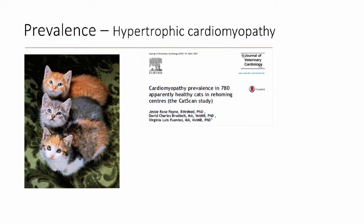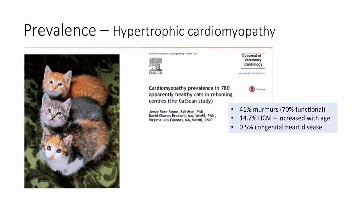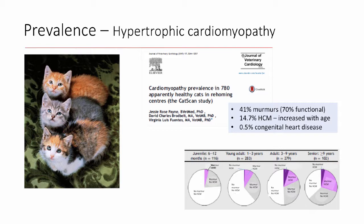So there's a pretty low prevalence of congenital heart disease, but this paper looked at nearly 800 cats in a shelter setting screening for hypertrophic cardiomyopathy. What they found was similar to other studies in the general cat population: a lot of cats have heart murmurs, many of those murmurs are functional or innocent and don't indicate heart disease, but a decent percentage — nearly 15% — had hypertrophic cardiomyopathy. Cats with murmurs are not necessarily the cats that had cardiomyopathy and vice versa, making it difficult to interpret murmurs in cats. They also found a half percent that had congenital heart disease.